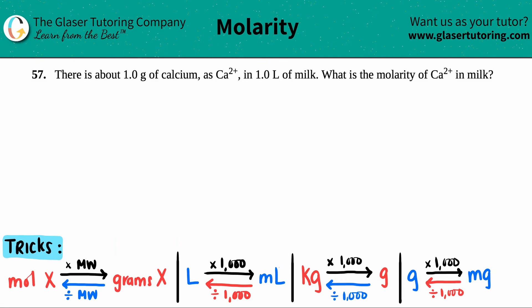Number 57. There's about 1.0 gram of calcium as Ca2+ in 1.0 liters of milk. What's the molarity of the Ca2+ in the milk? I don't know. Okay, thanks for tuning in guys, I'll see you.